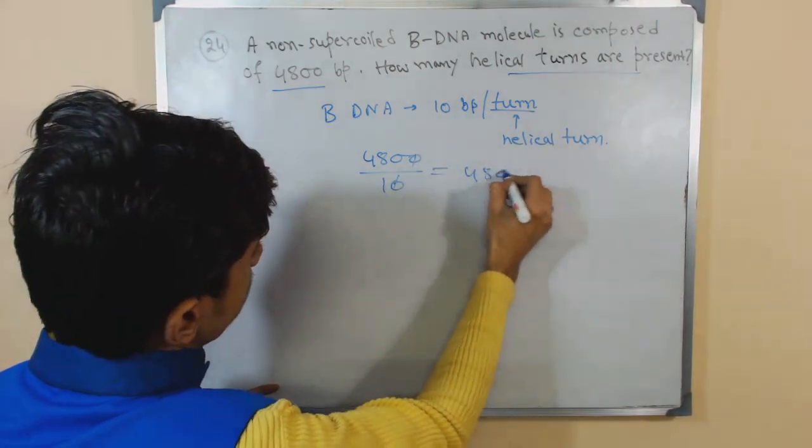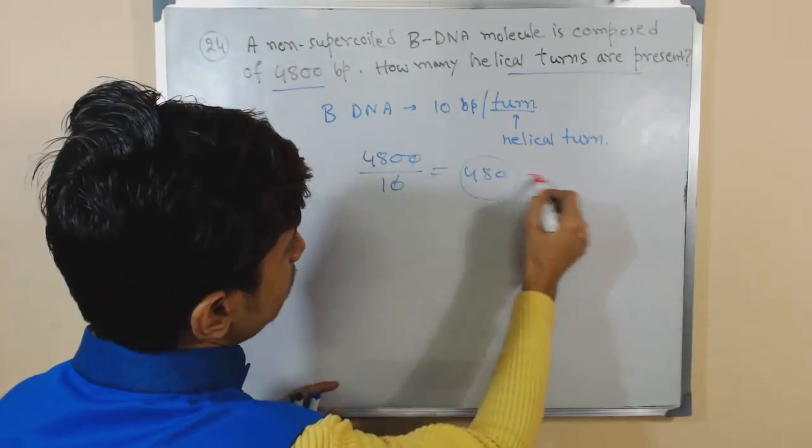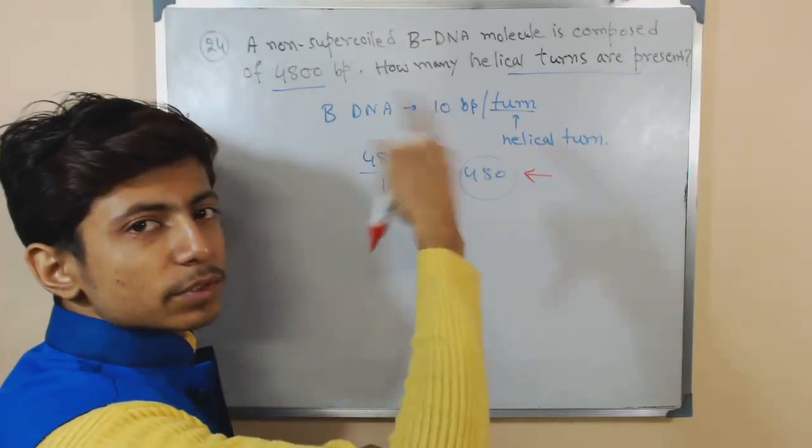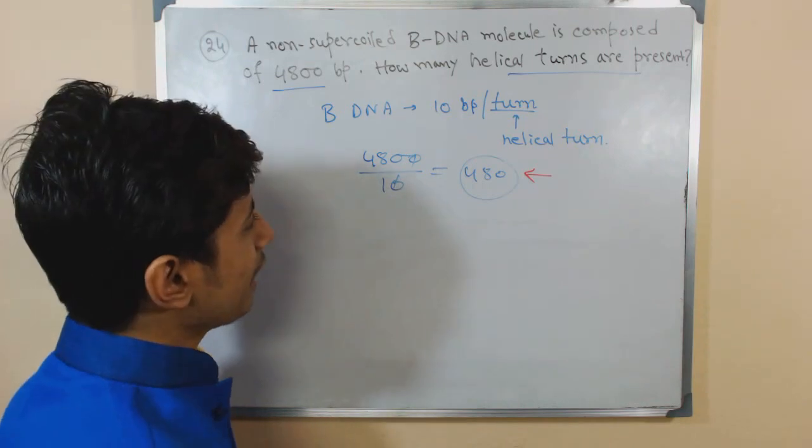So number of turns: 480. So the number of turns for this DNA is 480, that means 480 times it will rotate to make the helical structure, right?